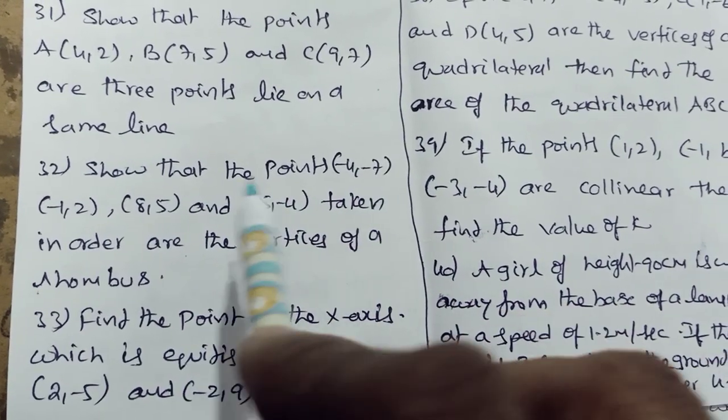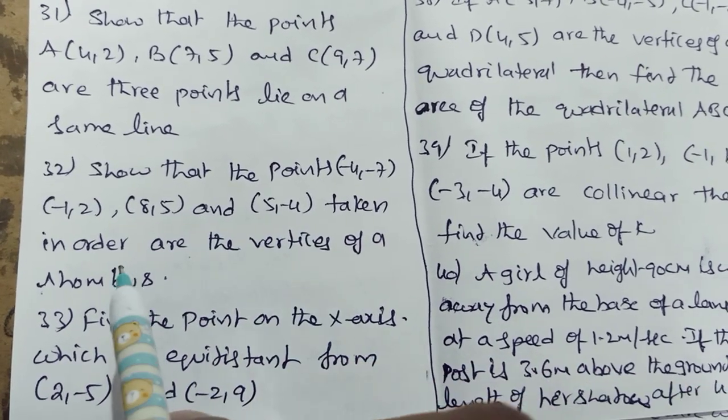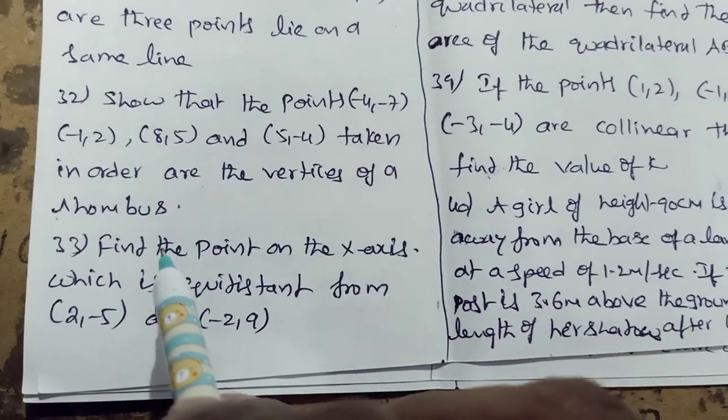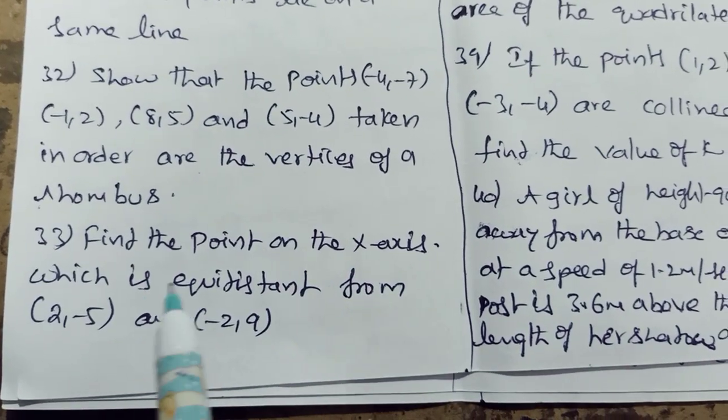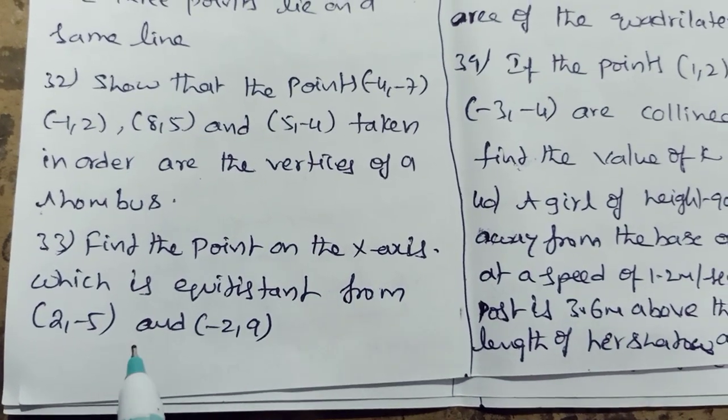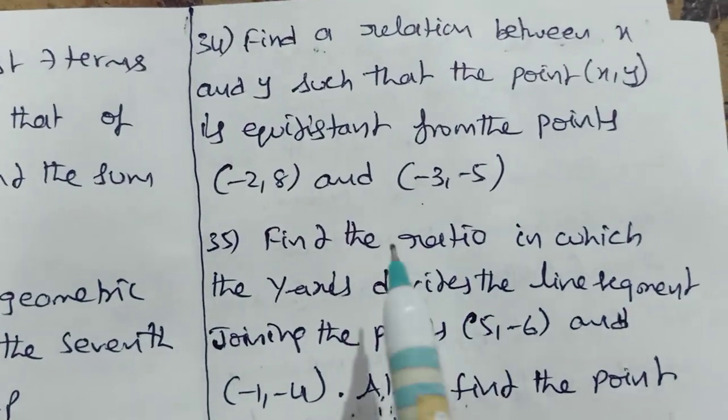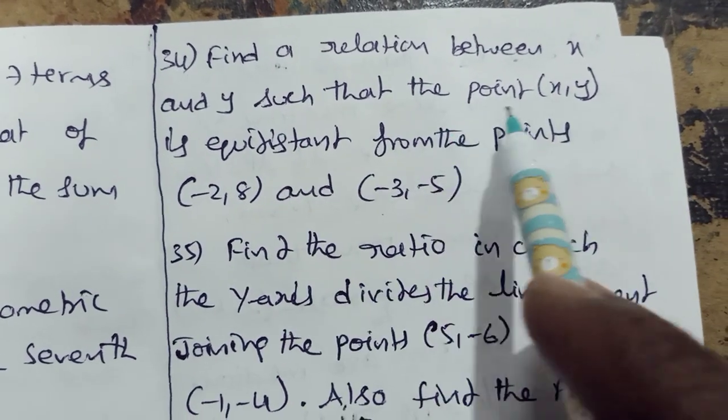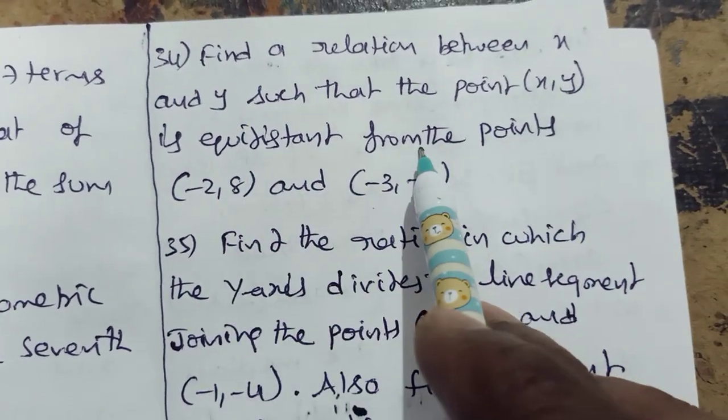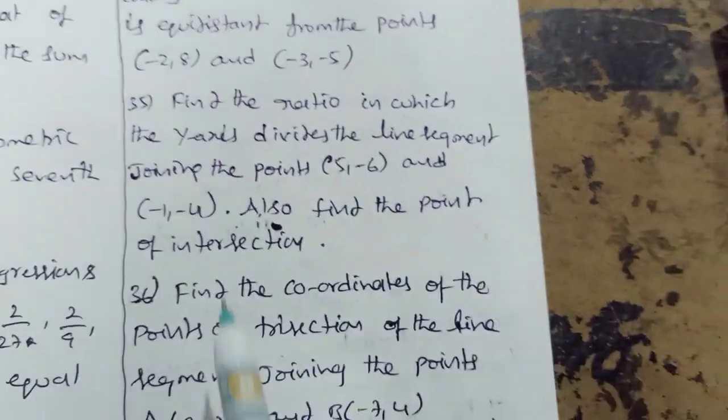Show that the points minus 4 7, minus 1 2, 8 5, and minus 5 minus 4 taken in order are the vertices of a rhombus. Find the point on the x-axis which is equidistant from 2 minus 5 and minus 2 9. Find a relation between x and y such that the point x y is equidistant from the points minus 2 8 and minus 3 5.